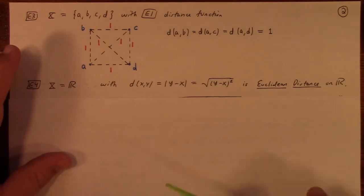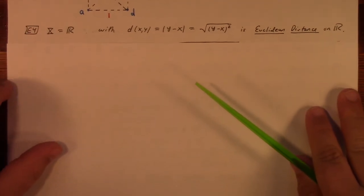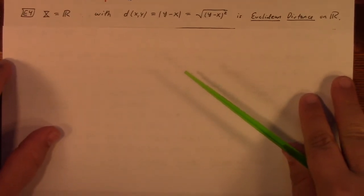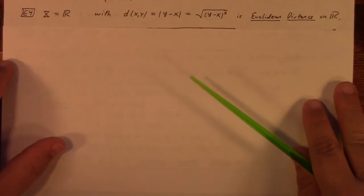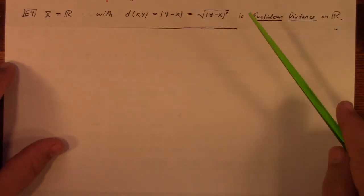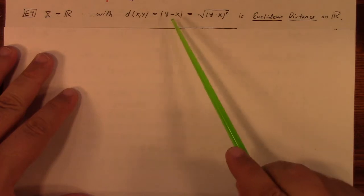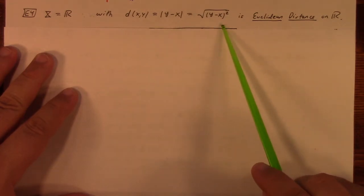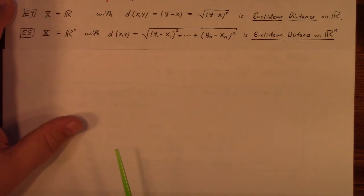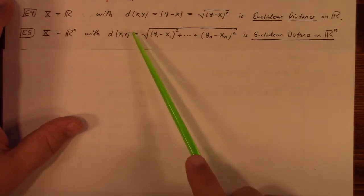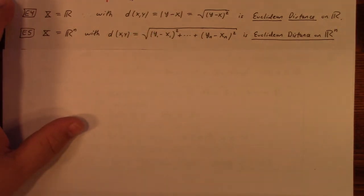Next example: Euclidean distance. Euclidean distance on R is defined by the absolute value function, which is the square root of the square. The Euclidean distance on R^n — we take the square root of the sum of the squares. Probably not telling you anything you haven't heard before.